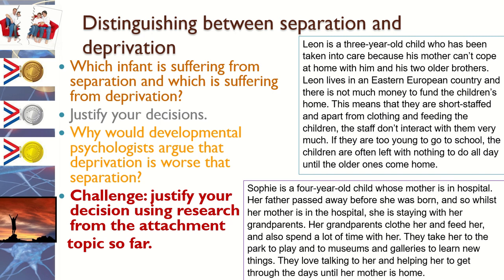Leon is suffering from deprivation because he has been removed from his primary caregiver and is not receiving any emotional care. There is no other caregiver providing him with emotional support — staff aren't interacting with him much and he's often left alone with nothing to do. Sophie, on the other hand, is showing separation: although her mother is in hospital, she has her grandparents as secondary caregivers who provide her with love and care. Sophie is supported and knows she's cared for, whereas Leon is learning that no one is there to support him, which can have a massive impact on how he deals with later life.